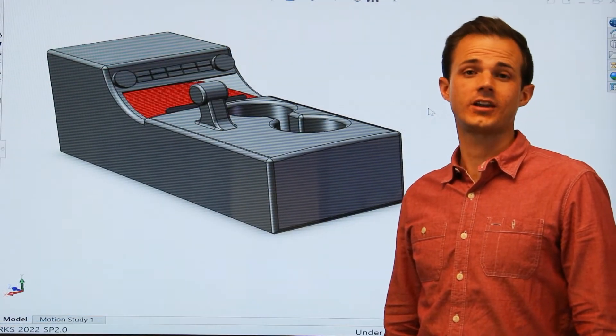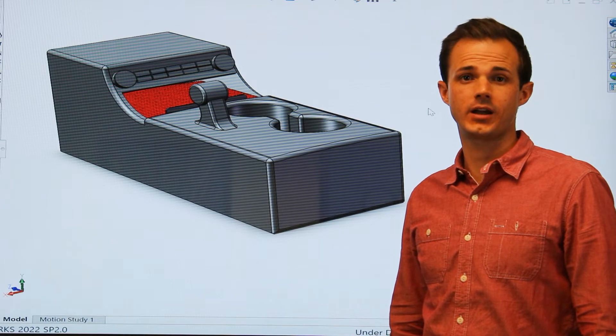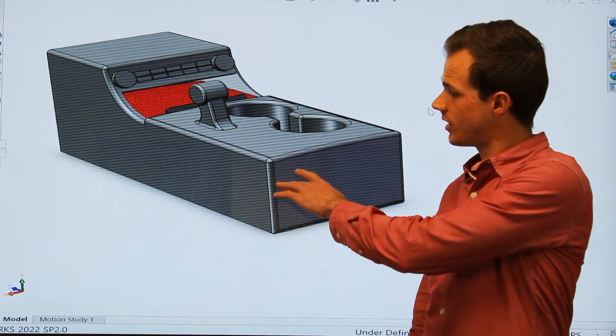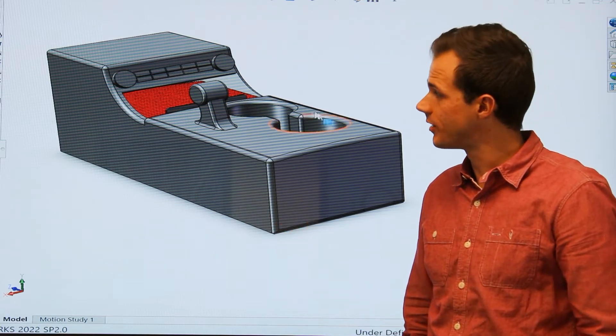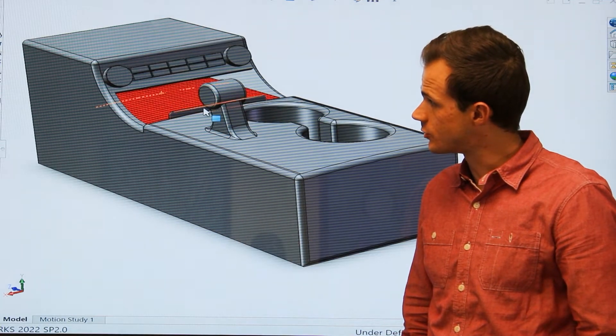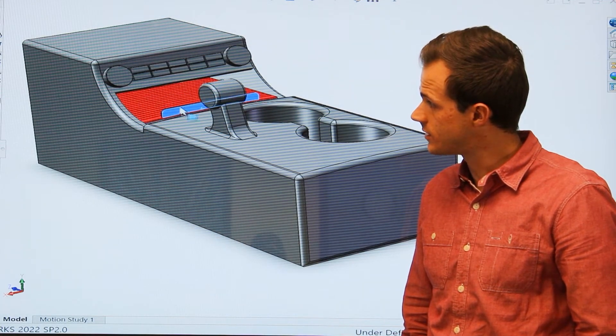Now let's take a look at how a mechanism can be powered by a constant force spring. This gray component represents the console that we saw just a moment ago, while this red component represents the drawer. You can see it slides in and out.